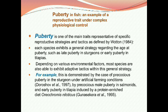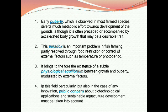By precocious male puberty in salmonids and early puberty in tilapia induced by a protein-enriched diet in Oreochromis niloticus in 1995. Early puberty is observed in most farmed species. It affects most metabolic efforts toward development of the gonads, although it is often preceded or accompanied by accelerated body growth that may be a desired trait. This paradox is an important problem in fish farming, partially resolved through food restrictions or controls of external factors such as temperature or photoperiod. The most important point is it brings the coexistence of physiological equilibrium between growth and puberty, modulated by external factors.